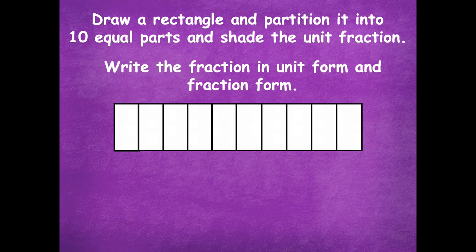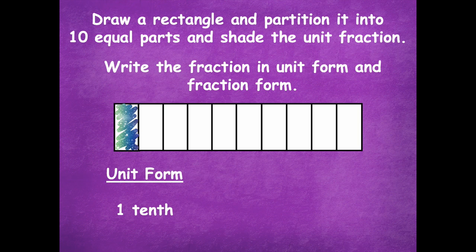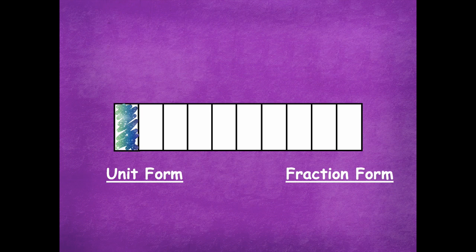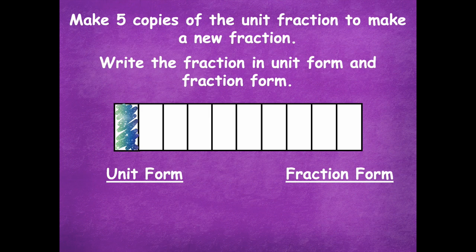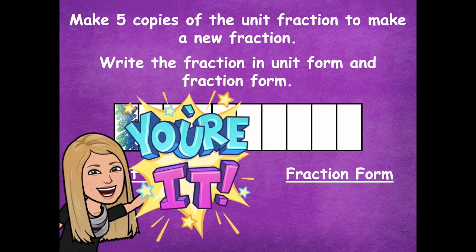Here is my rectangle with ten equal parts. One is shaded for the unit fraction, and I would write that as 'one-tenth' for the unit form and one-over-ten for the fraction form. Next part: you're going to make five copies of the unit fraction to make a new fraction, then write the fraction in unit form and fraction form. Pause the video, make five more copies, write it in both forms, and click play when you're ready.